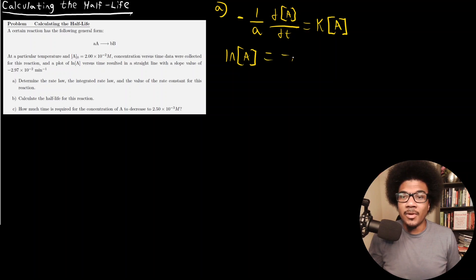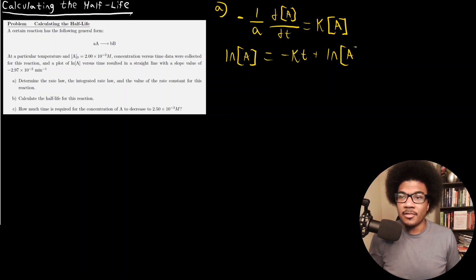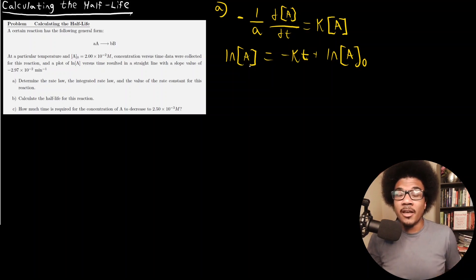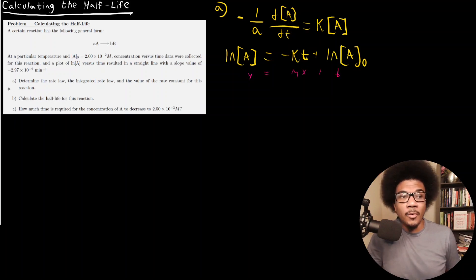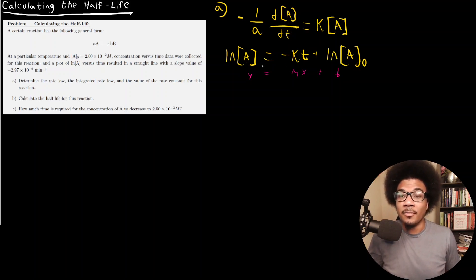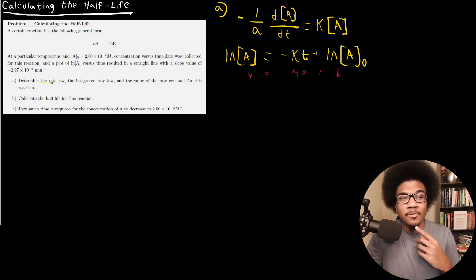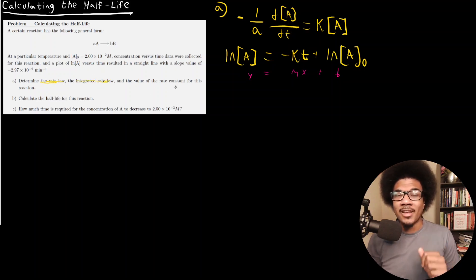The integrated rate law looks like the following: LN[A] = −kt + LN[A₀]. This is where the straight-line relationship between time and the natural log of A comes from. This is really just y = mx + b — a linear relationship between the natural log of the concentration of your reactant and time.